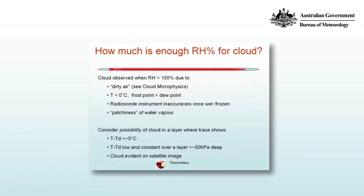We can use relative humidity, which can be inferred from the dewpoint depression. But how much is enough for cloud to form? From the previous slides we saw low-level stratus where relative humidity was less than 100%. Normally we'd expect saturation to occur at 100%, but in fact saturation can occur at relative humidities less than that. One reason is the presence of dirty air, or cloud condensation nuclei — particles in the air that make it easier to form cloud, which you'll discuss in a cloud microphysics course.